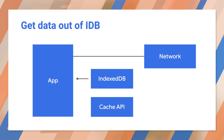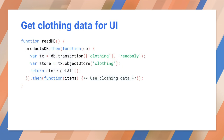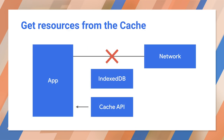For data, we can retrieve that from local storage instead of the network. Here we access products from the data store and retrieve all of the items. These items can then be used to update the UI or whatever is needed. For resources like HTML, CSS, JavaScript, and images, we can retrieve those from the cache instead of the network.